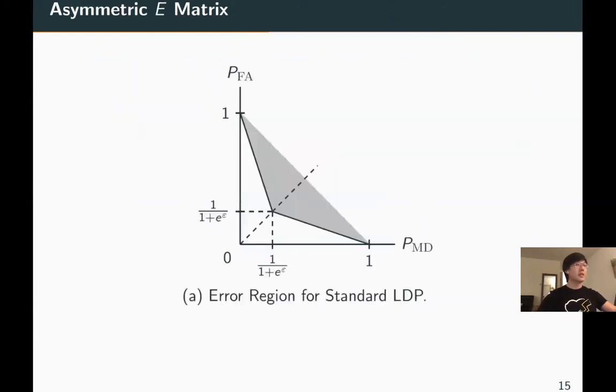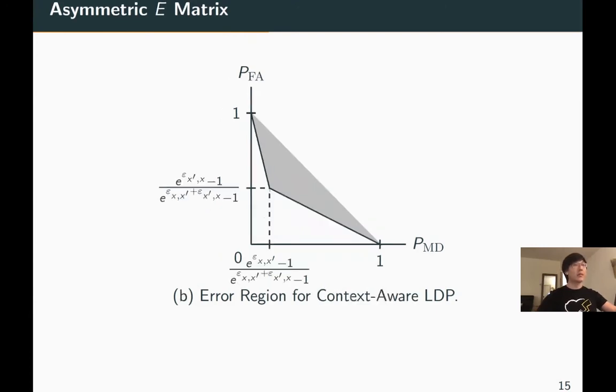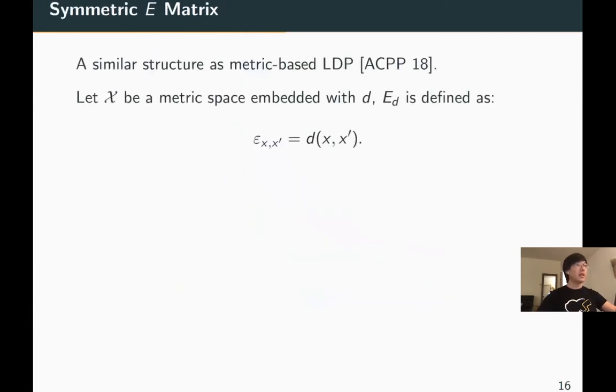This figure shows the achievable region for standard LDP, and we can see it is symmetric along the line P_FA equals P_MD. For context-aware LDP, the region can be asymmetric. In this case, epsilon_{x,x'} is smaller than epsilon_{x',x}. We can see we are enforcing the false alarm rate to be higher, which means we are protecting more of the privacy of element x.